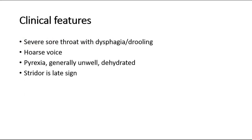The clinical features of acute epiglottitis: the child may present with severe sore throat together with dysphagia, which is difficulty in swallowing, and also drooling of saliva. They may have a hoarse voice and pyrexia where there is fever, and generally they look unwell, ill, toxic-looking, and dehydrated. Stridor is a late sign of acute epiglottitis, indicating that some respiratory obstruction is already occurring.